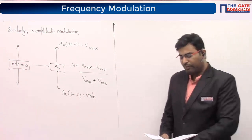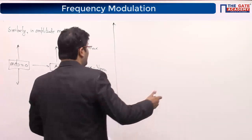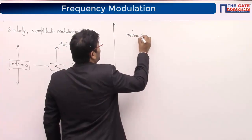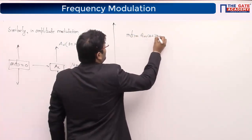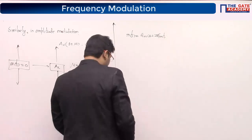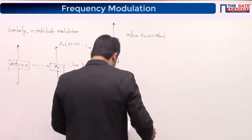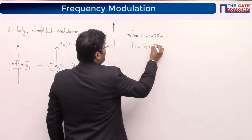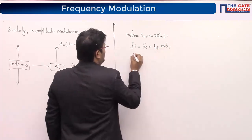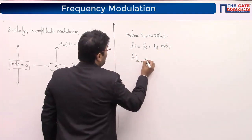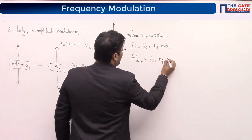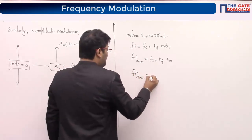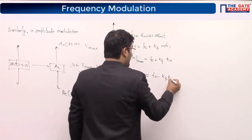Moving further, let's start with the sinusoidal message signal: m(t) = Am·cos(2πfm·t). Then Fi = fc + Kf·m(t), so Fi_max = fc + Kf·Am and Fi_min = fc − Kf·Am. We can also write these as fc + ΔF and fc − ΔF. Comparing, delta F = Kf · Am — a formula you should never forget.